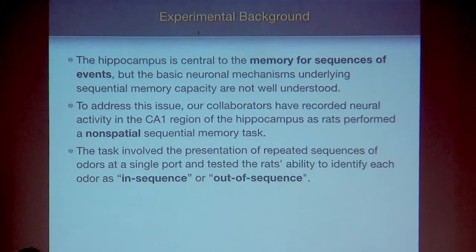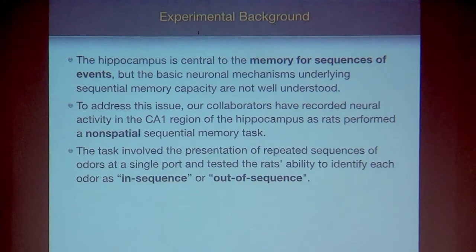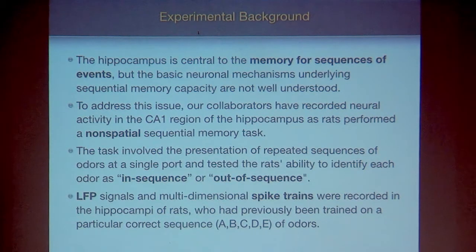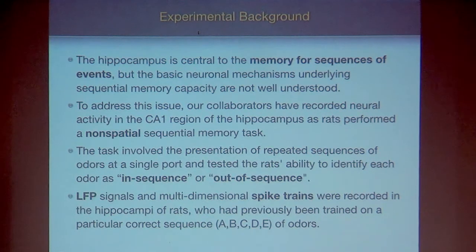The task involves presenting a sequence of odors at a single port while the rat stays in place. We examine whether the rat can identify if a sequence is in the correct order or out of sequence. The rat has five odors labeled A, B, C, D, E in the correct order. If shown A, B, A, D, E, the rat should recognize something is wrong. Two types of data are collected: continuous time series (local field potentials) and spike trains (firing patterns). The rat indicates its answer by staying more than one second for correct sequences, or withdrawing within one second for incorrect ones.